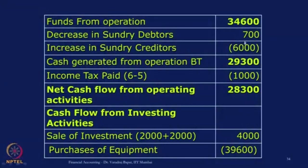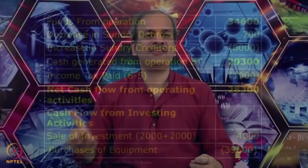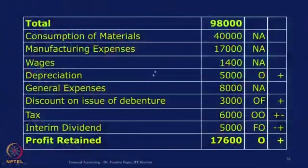After adjusting debtors and creditors, we get cash generated from operations, but before tax — marked as BT — which is 29,300. Now the income tax paid is to be reduced, which is 1,000. From where do we get 1,000? It was not given directly. We had 2 figures: we will go to P&L where the taxes provided was 6,000. The actual payment we do not know, but that much tax was charged in P&L.